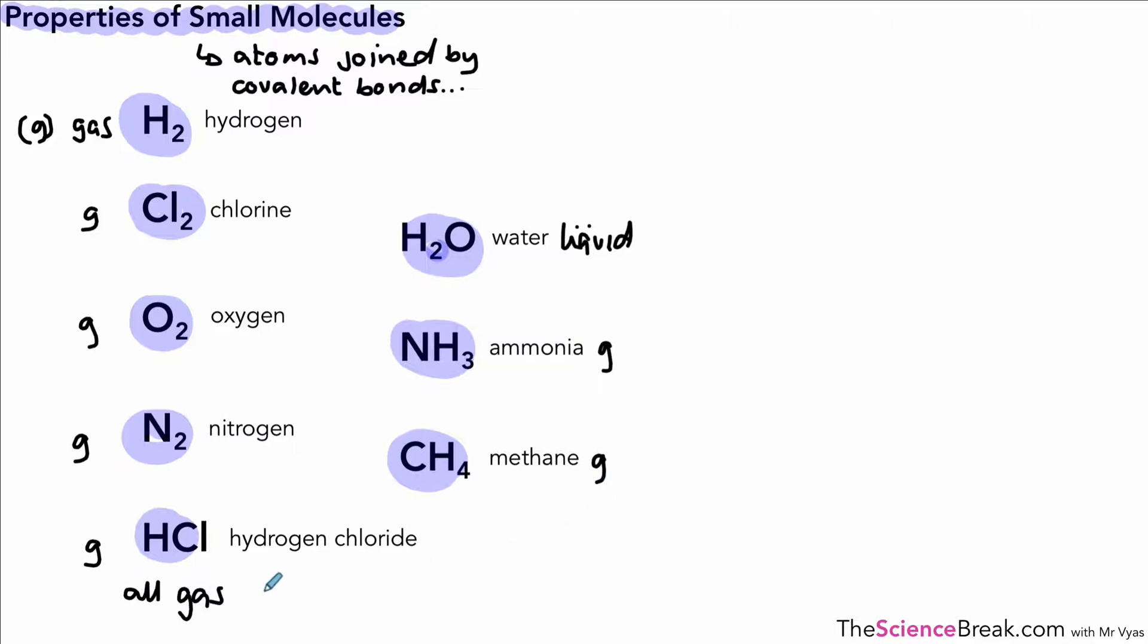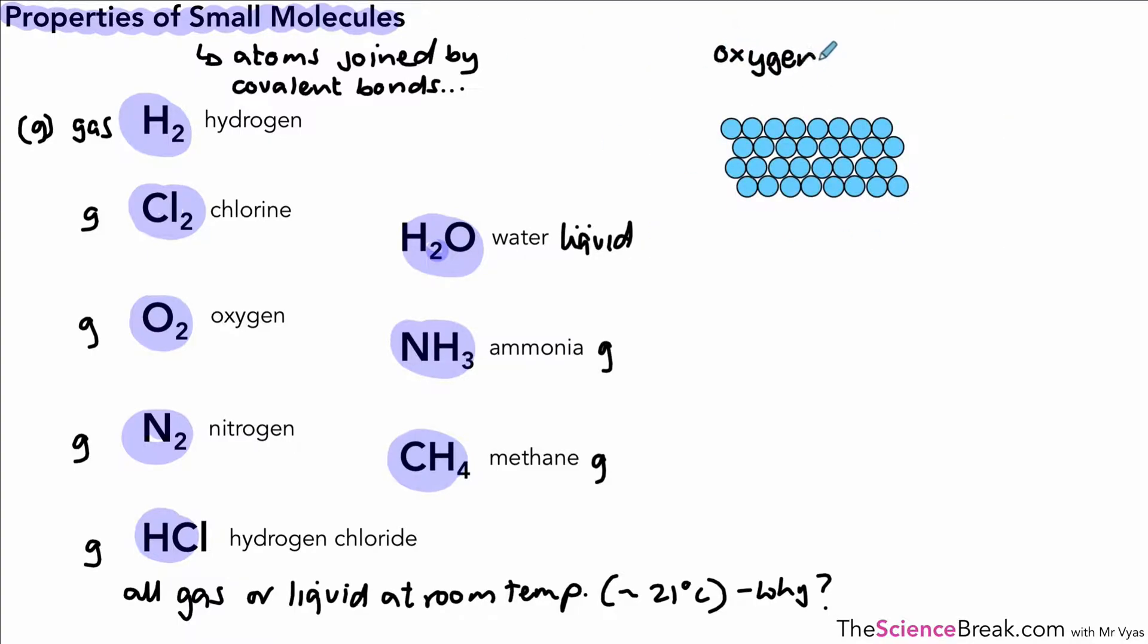And by room temperature we mean approximately 21 degrees or so, something like that. We need to be able to explain why these are liquid or gas at room temperature. Now to help us understand, let's have a look at the example of oxygen.